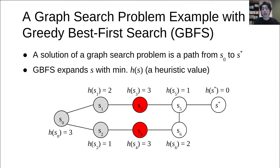Now we have two states S3 and S4 with the same h-value. In this situation, the tie-breaking strategy decides which state to expand. In this case, we choose S3. GBFS expands S3, S5, and finds a solution.